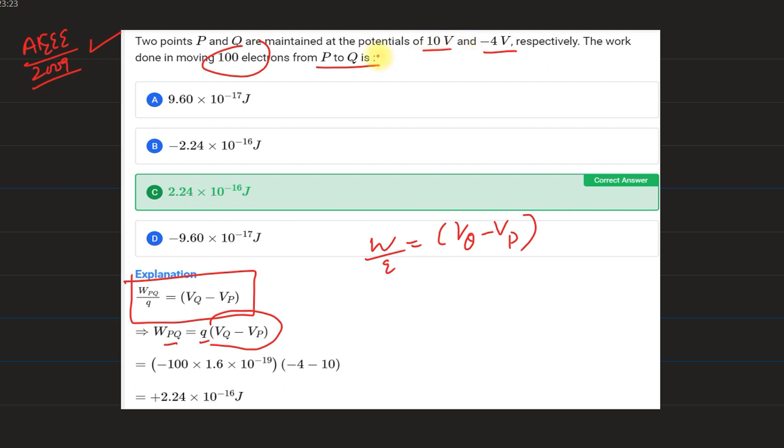Potential of point Q is basically minus 4 and P is 10. We put VQ value minus 4 and VP value 10. We move here 100 electrons.